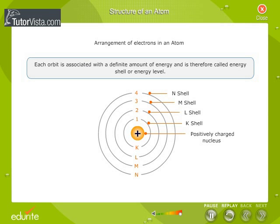These energy levels are numbered starting from nucleus outward as 1, 2, 3, 4 and so on or named as K, L, M, N and so on.